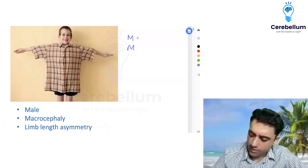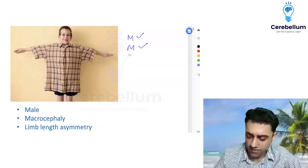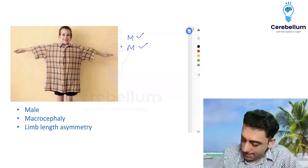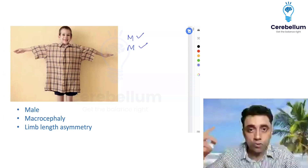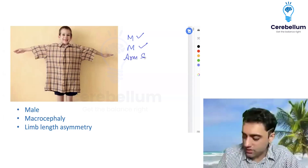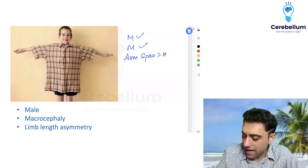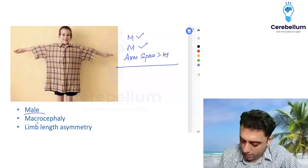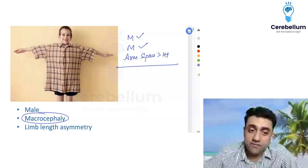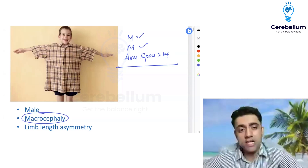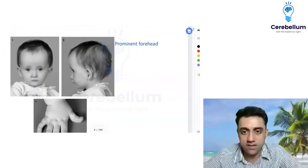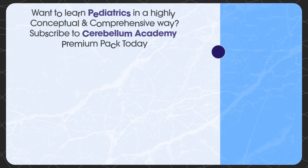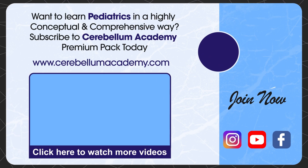How does a patient with Russell-Silver syndrome present? Classical presentation: a male patient with microcephaly where the arm span is more than the height, and limb length discrepancy. A male patient with microcephaly and limb length discrepancy is seen in Russell-Silver syndrome.